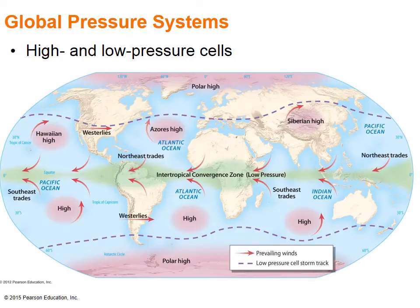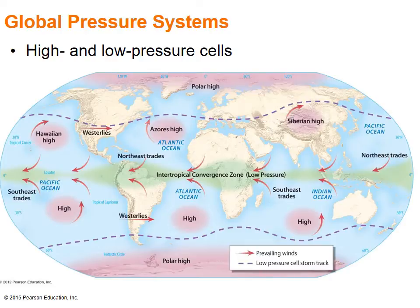Uneven heating of the Earth's surface due to latitudinal differences, combined with the arrangement of oceans and continents, produce a regular pattern of high and low pressure cells that can produce rainstorms when they collide. There are areas of the world that experience the collision of the two pressure systems more than others, which can explain why there is more rainfall in some areas and very little in others.